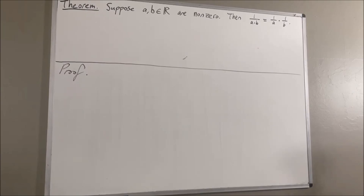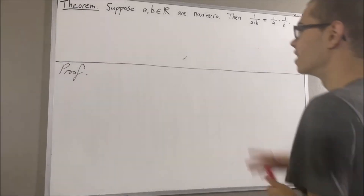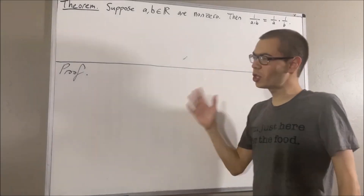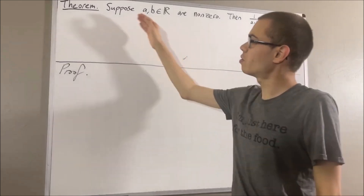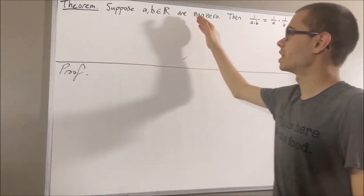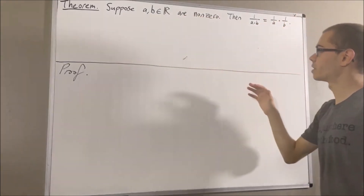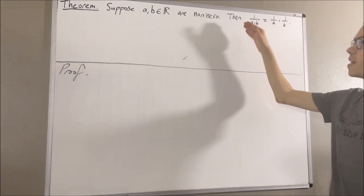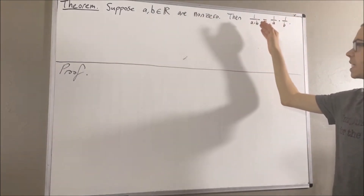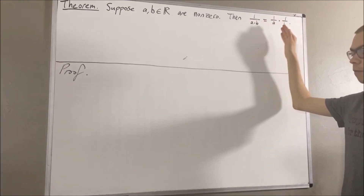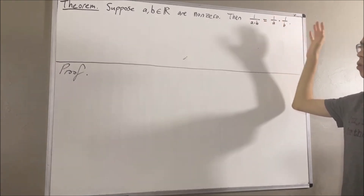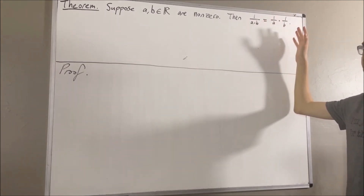Hello! In this video, we are going to prove the following theorem: Suppose A and B are non-zero real numbers. Then the reciprocal of A times B is equal to the reciprocal of A times the reciprocal of B.